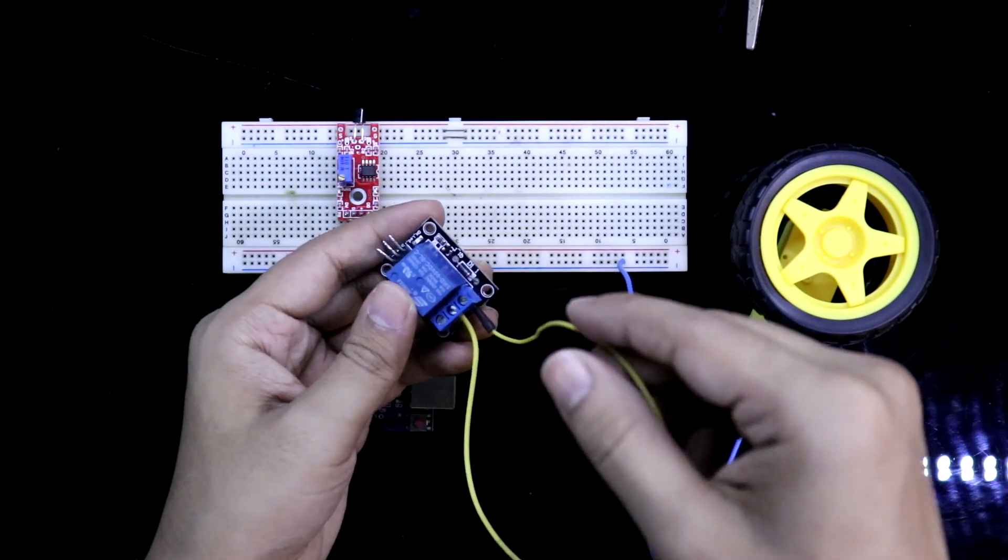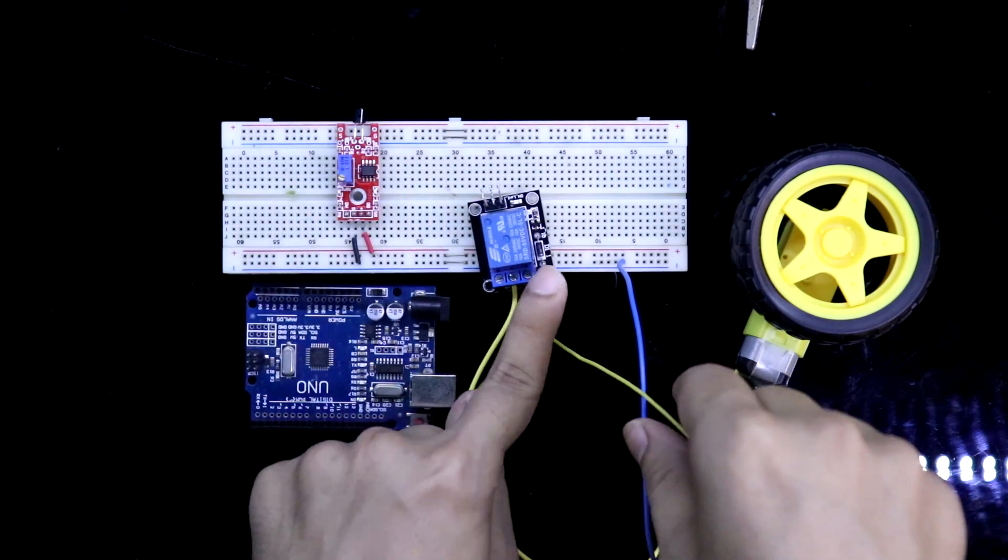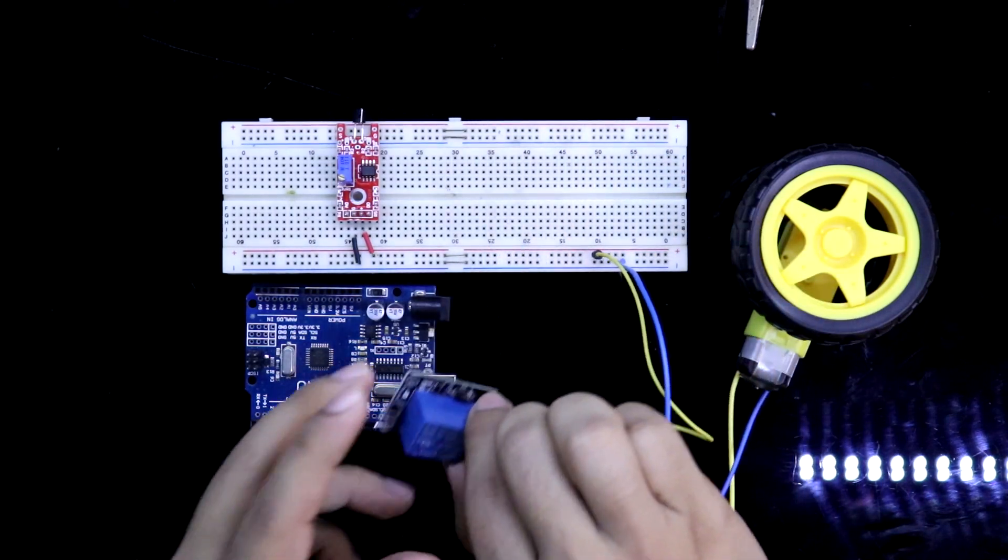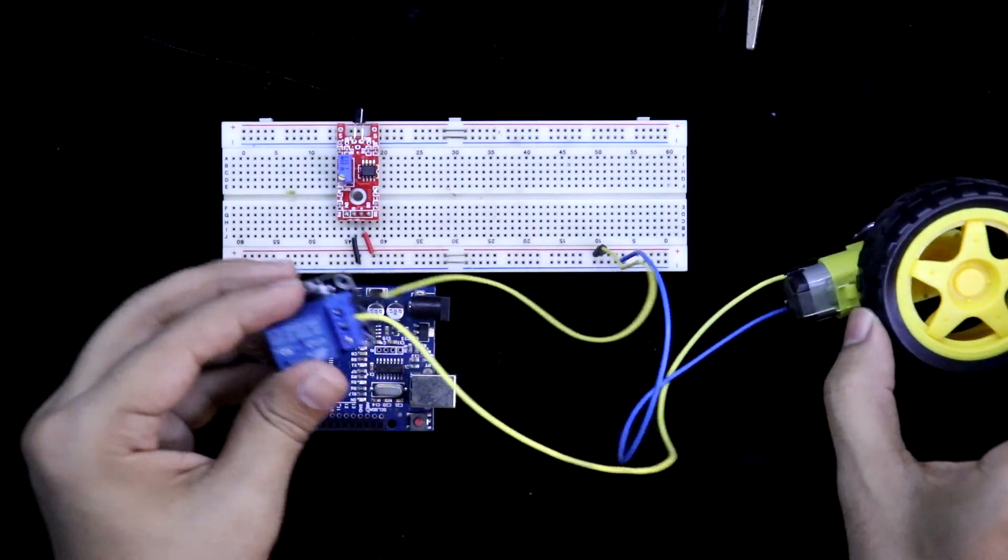And another pin is connected. It is normally closed and it is connected to the positive rail. So this is your motor connection and relay.